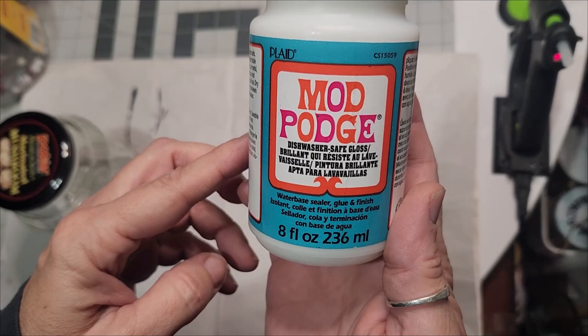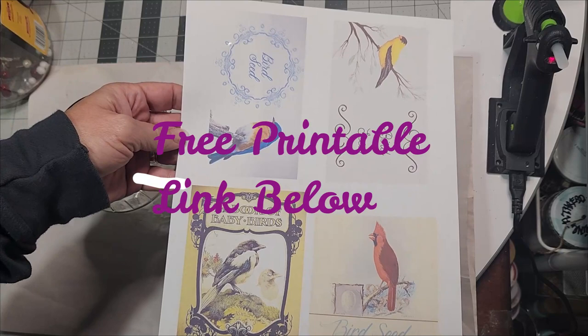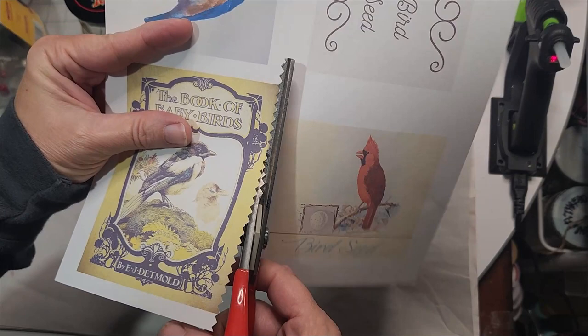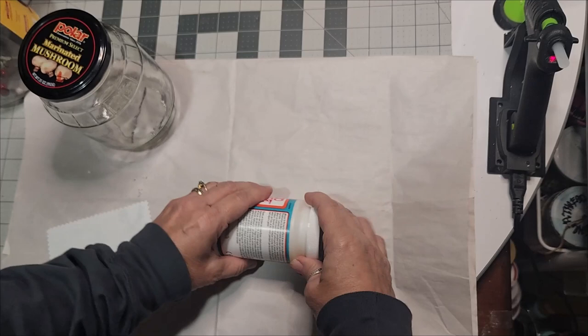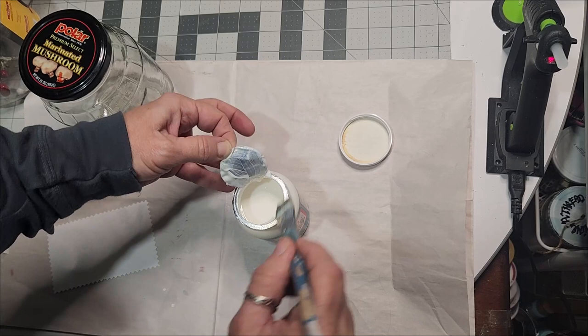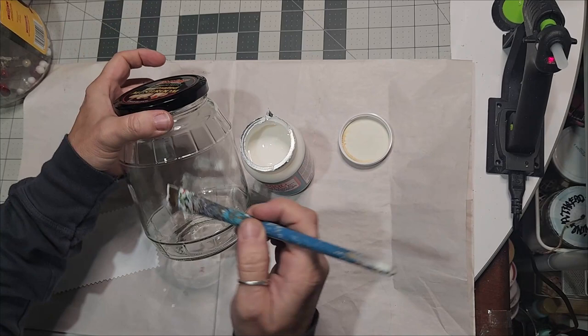We're going to start out and introduce you to dishwasher safe Mod Podge. I'm repurposing a big jar. All these free printables you'll find the link in the description box down below. Now the Mod Podge directions say to roll it on the table, and the dishwasher safe Mod Podge is more of a gel and it does dry clear.